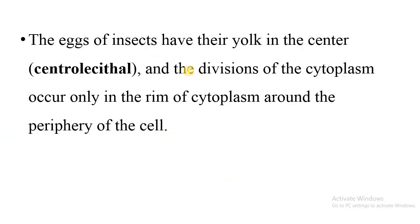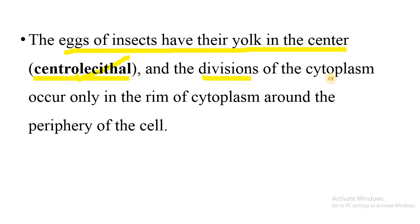The eggs of insects have their yolk in the center — this is called centrolecithal. The divisions of cytoplasm occur only in the rim of cytoplasm around the periphery of the cell.